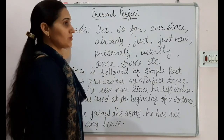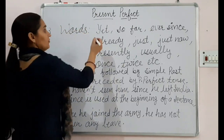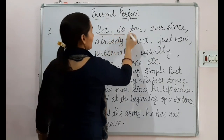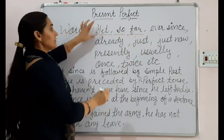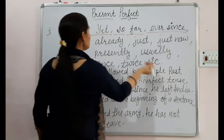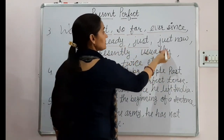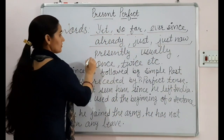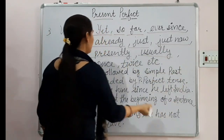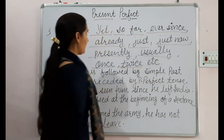There are certain signal words that we always use with present perfect tense: yet, so far, ever since, already, just, just now, presently, usually, once, twice, etc. Whenever you see these words in a sentence, use present perfect tense.